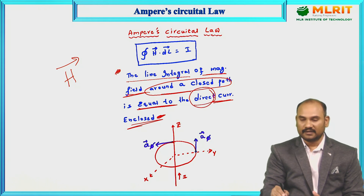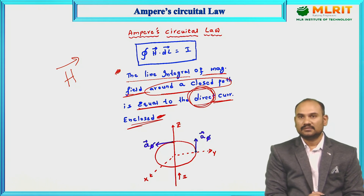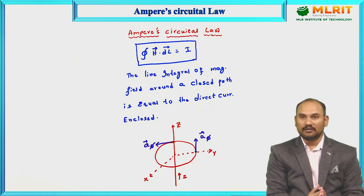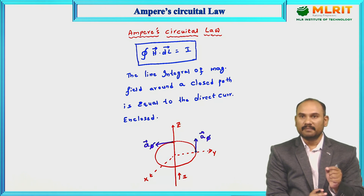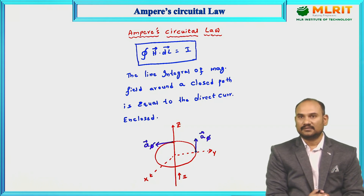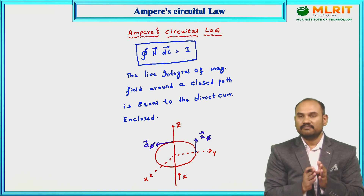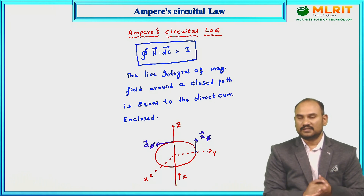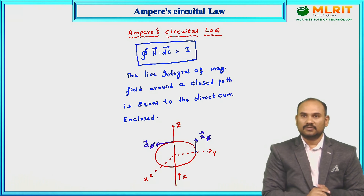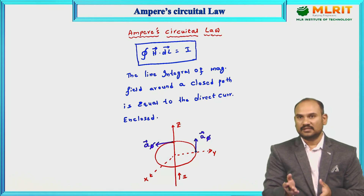I specifically mention direct current — DC current — where the current remains static. The reason is the chapter is called magnetostatics: the study of static magnetic fields. For a static, time-invariant magnetic field, you need static, steady current — time-invariant current, which we refer to as DC current, which does not change with time and remains constant. So magnetostatics deals with static magnetic fields whose source is static, or DC, current.